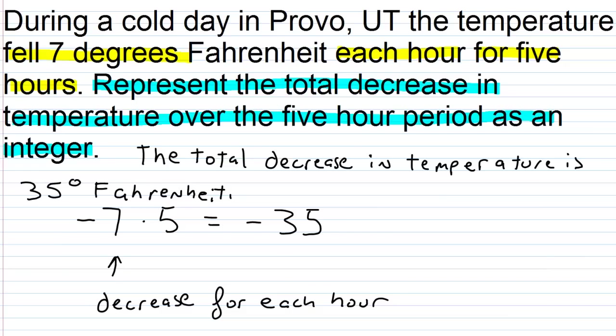To check: the temperature fell 7 degrees Fahrenheit each hour, so we represent that as negative 7, and it does that for 5 hours — so it's just negative 7 times 5, which is negative 35. To represent the total decrease in temperature over the 5-hour period as an integer, we get negative 35. The total decrease in temperature is 35 degrees Fahrenheit.